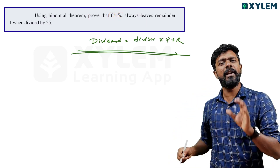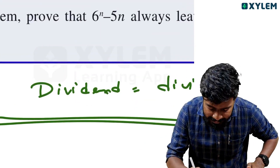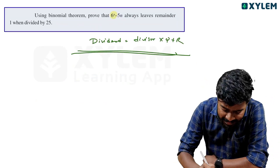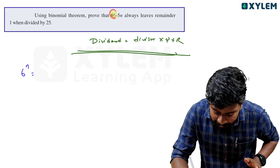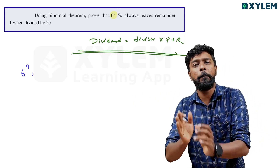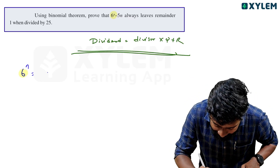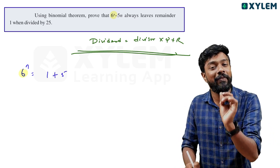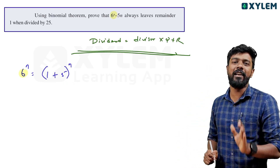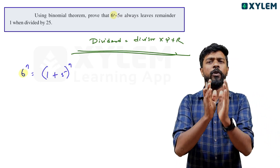Now, 6 raised to n minus 5: in the first question, power n means 6 raised to n. The first term is 6 raised to n. We write 6 as 1 plus 5, since 1 plus 5 equals 6. That number is 5. So 1 plus 5 equals 6, and we expand 6 raised to n as (1 plus 5) raised to n.